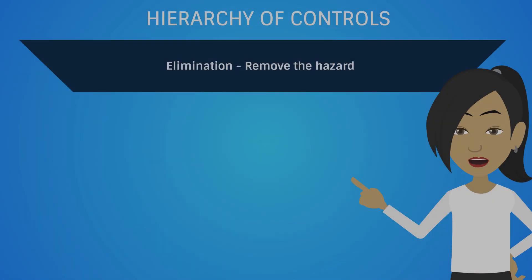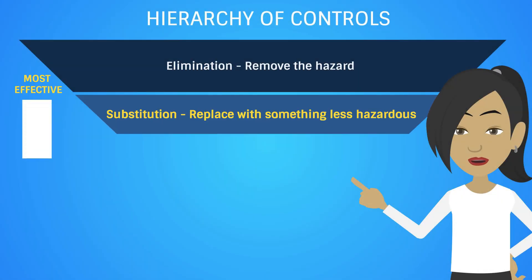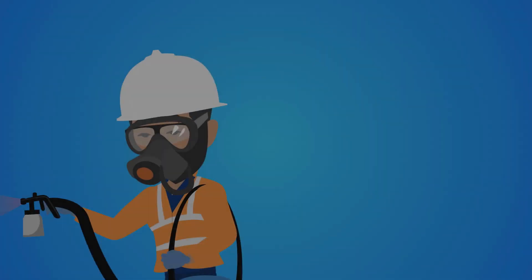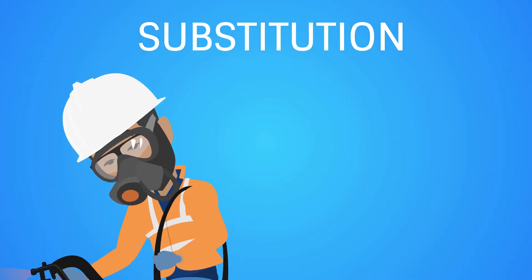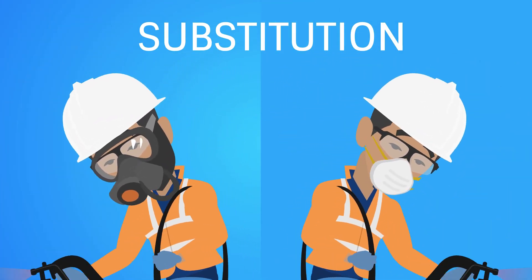The following most effective control is substitution. We do this by exchanging something hazardous with something less hazardous. For example, replacing a solvent-based substance with a water-based product.